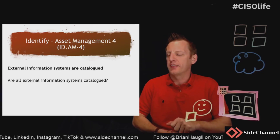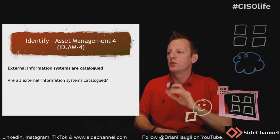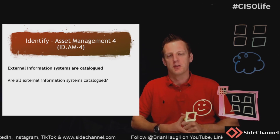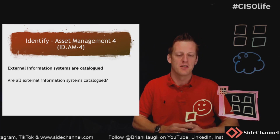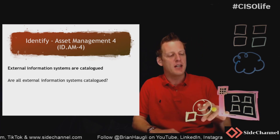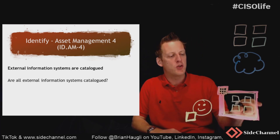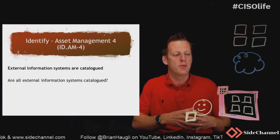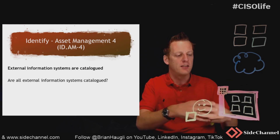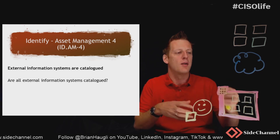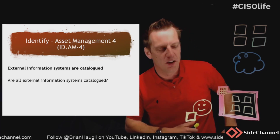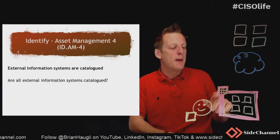The fourth control in asset management: do you have external information systems cataloged? I'll probably catch some flack, but I'm not trying to represent everybody's bastion host, everything-on-prem scenario — follow me for the illustration.